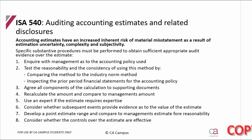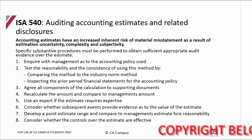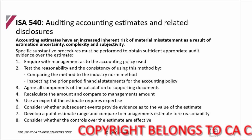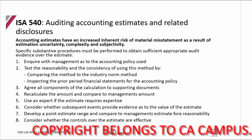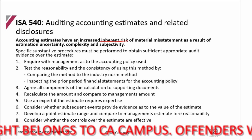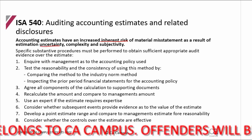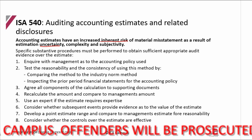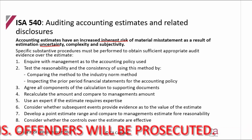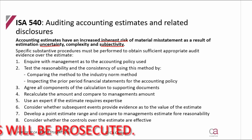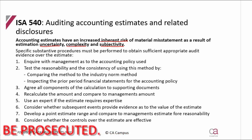ISA 540 addresses auditing accounting estimates and related disclosures. Estimates have been specifically highlighted by auditing standards as needing additional work compared to any other balance because of the increased inherent risk of material misstatement. Where there's an estimate, there is uncertainty — there's no cut-and-dry IFRS requirement for how you determine the balance; IFRS allows for judgment and subjectivity.